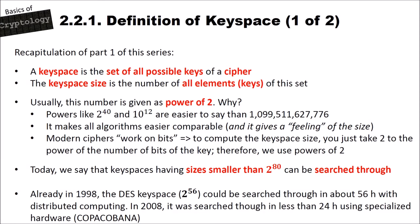Expressing keyspace size as a power of 2 makes all algorithms easier to compare. As a cryptanalyst, it gives a feeling of size — for instance, a cipher with a keyspace of 2 to the power of 40 I estimate can be searched through in a night on a single computer, while a cipher with a keyspace of 2 to the power of 80 is for me a secure cipher. Modern ciphers work on bits, so to compute keyspace size you take 2 to the power of the number of bits in the key — that is why we use powers of 2.